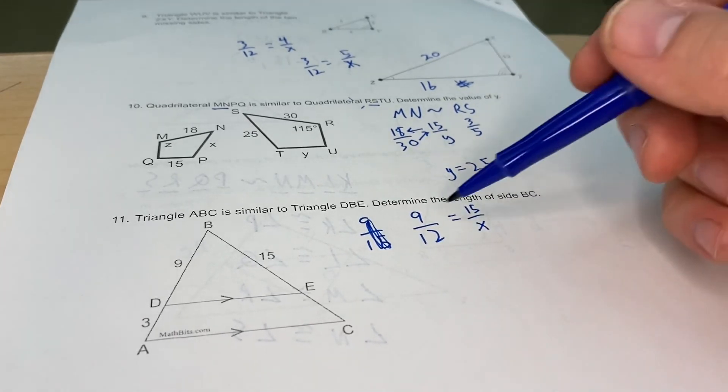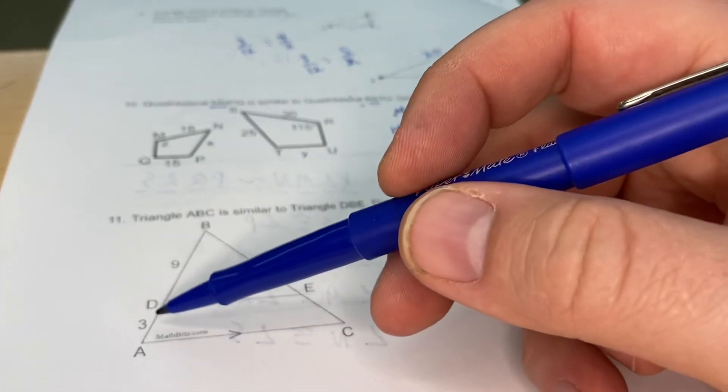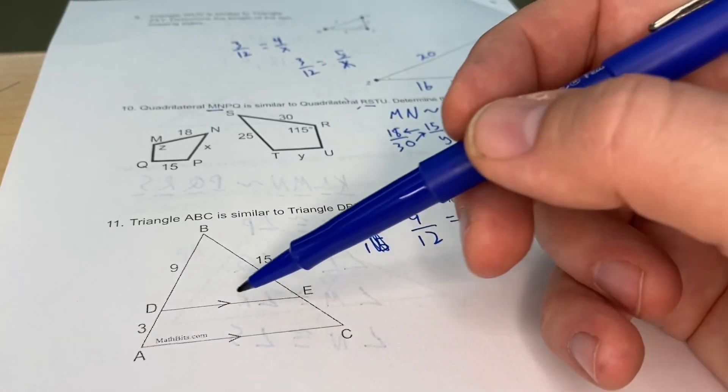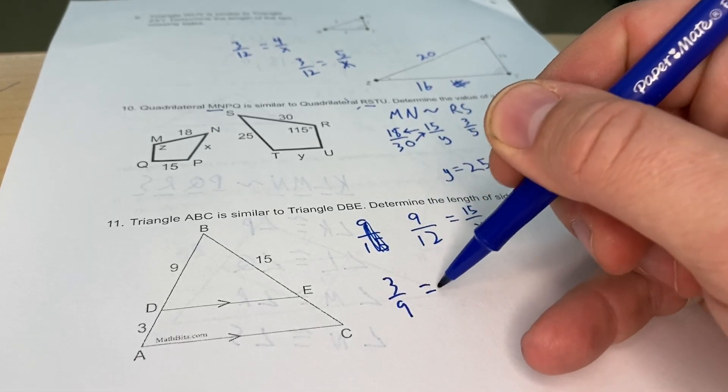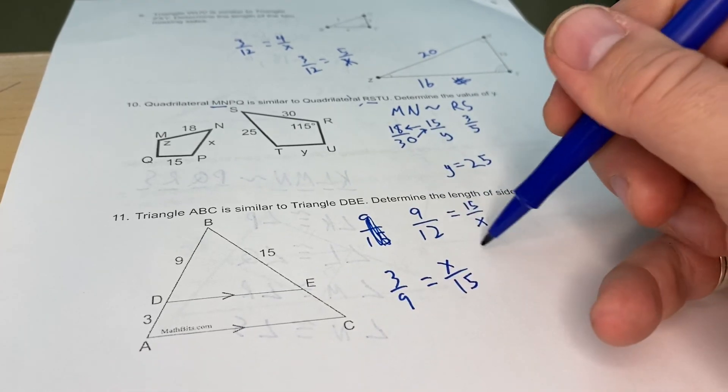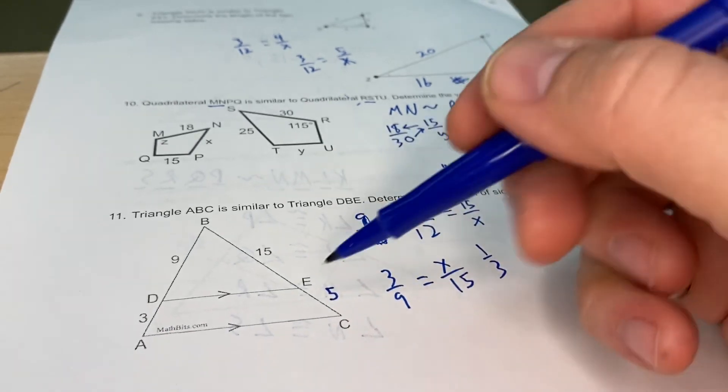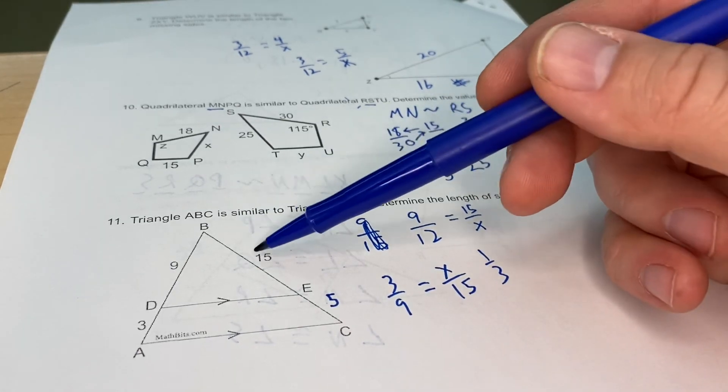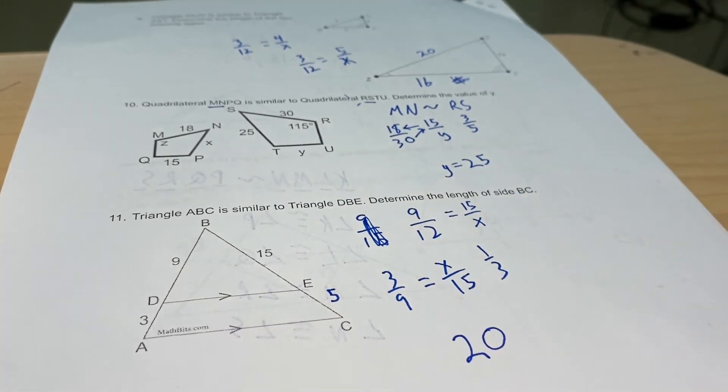What I'm going to do instead is I know that this proportion is going to be the same because these are parallel lines. So this to me reads 3 is to 9 as x is to 15. Well, 3 out of 9 is 1/3, and the number that is 1/3 of 15 is 5. So I've got EC is 5, but it is asking me for the entire side of BC. So 15 plus 5 means that the whole side is going to be 20 units.